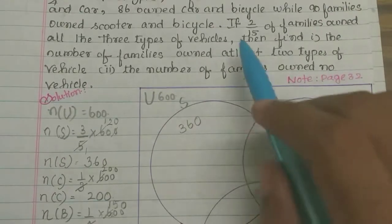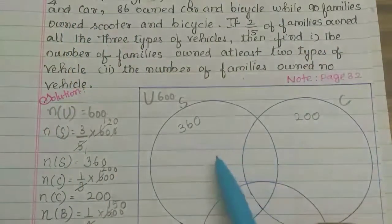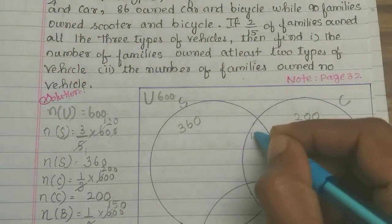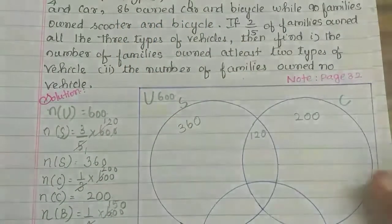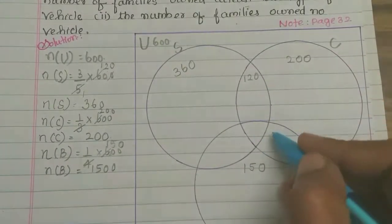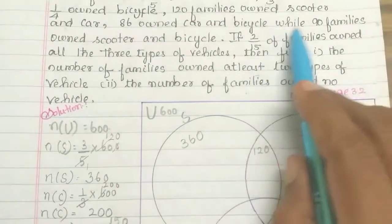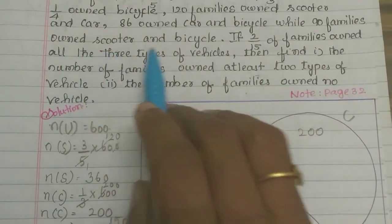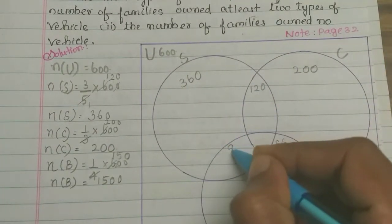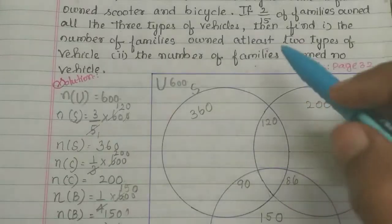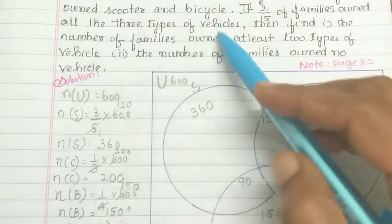Next, 120 families owned scooter and car — so scooter and car intersection is 120. Then 86 owned car and bicycle — car and bicycle intersection is 86. While 90 families owned scooter and bicycle — scooter and bicycle intersection is 90. Next, 2 by 15 of families owned all 3 types of vehicles.